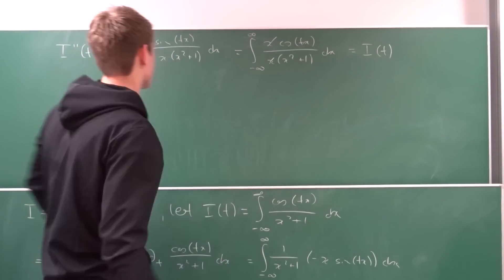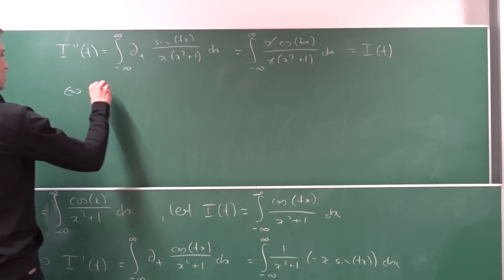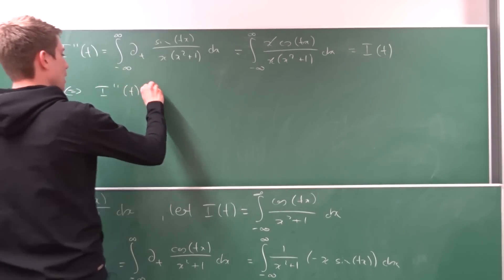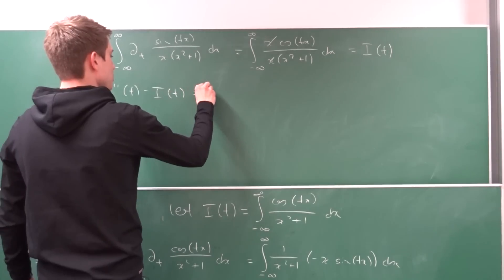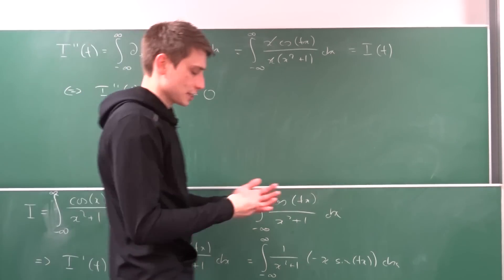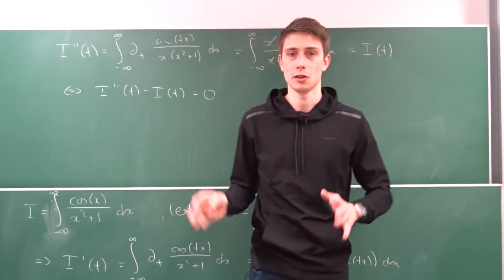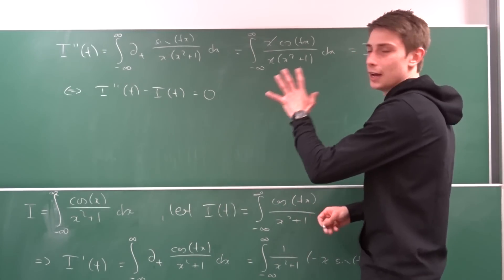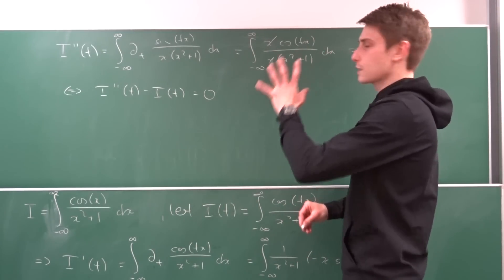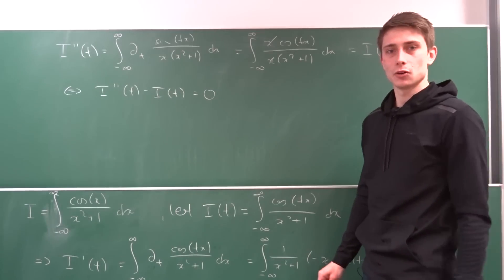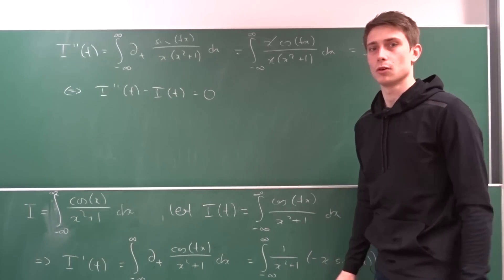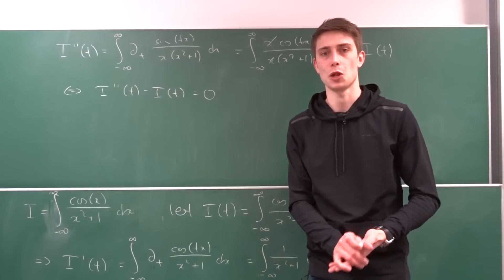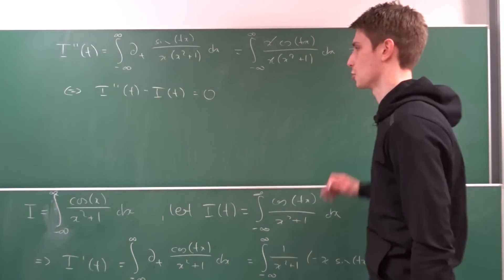We bring I(t) to the other side: I double prime(t) minus I(t) equals zero. This is a second-order linear homogeneous ordinary differential equation, and we are going to solve it using an exponential ansatz.